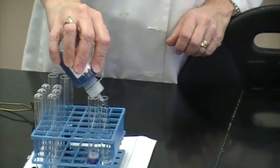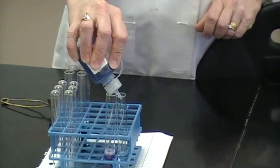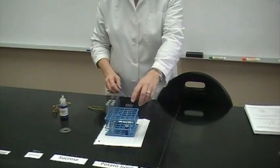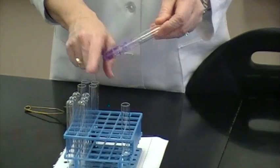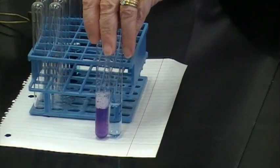A control is always used so that we have that for comparison and reference back to what a non-positive test looks like. We mix each test tube thoroughly. And again, when you compare each test solution to the control, you can see the color change is obvious.